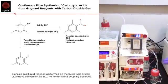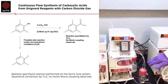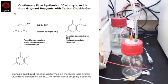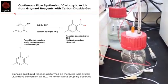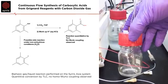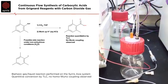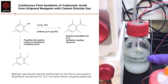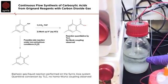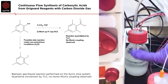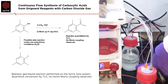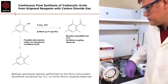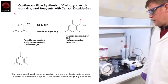One thing to note is, as we're using carbon dioxide, we need to handle this carefully. So our output is going via our back pressure regulator into our acidic quench, which is coming out under a sealed condition into a scrubbing vessel with sodium hydroxide. And you can see the build up of our by-products — carbon dioxide — in the bottom.